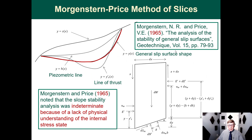Ten years later, Morgenstern completed his PhD thesis at Imperial College and came up with a way to solve for both moment and force equilibrium simultaneously. The free body diagram includes the inter-slice forces, but the analysis lacked a complete understanding of the forces between slices.